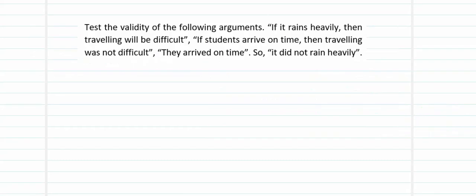We will test the validity of the following arguments. First statement: if it rains heavily, then traveling will be difficult. Second statement: if students arrive on time, then traveling was not difficult. Third: they arrived on time. Therefore — this part is our conclusion — it did not rain heavily. Now this has been given to us as statements, so let us form propositions and then convert them into hypotheses or valid clues which refer to these statements.